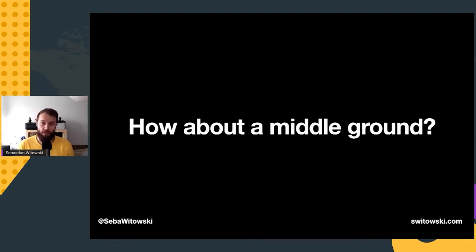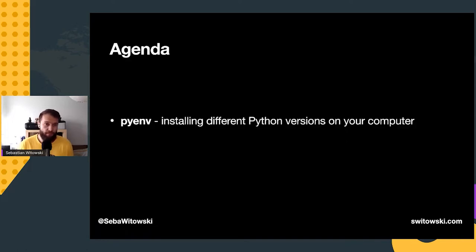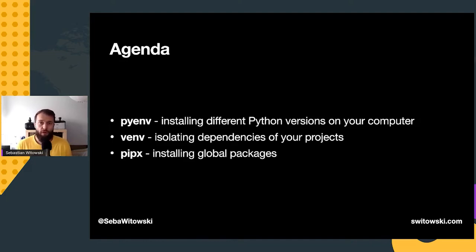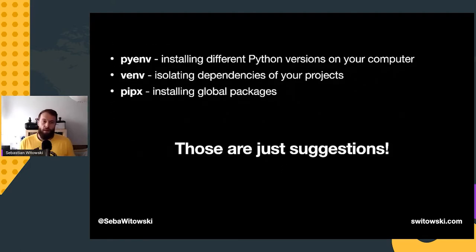That's why I've decided to make this presentation — I want to show you some useful Python tools that will make your life easier, tools that I recommend to my colleagues and clients. We'll talk about things that a lot of beginner programmers struggle with. First, I will show you how to install different Python versions using a tool called pyenv. Next, I will talk about Python dependencies, explain what virtual environments are, how they work, and why you need them. I'll compare the built-in venv module with external tools like virtualenvwrapper, and finally we'll talk about a tool called pipx.